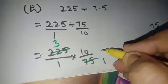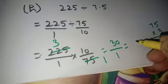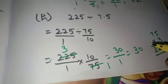Then 3 times 10 is 30, 1 times 1 is 1. The answer is 30.